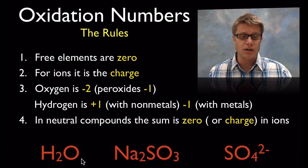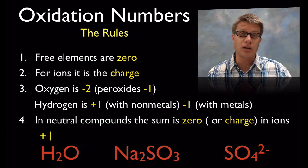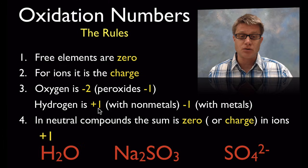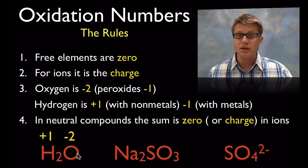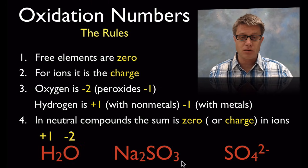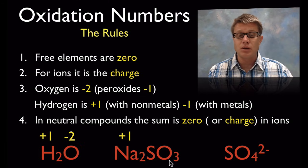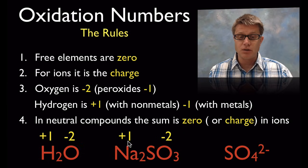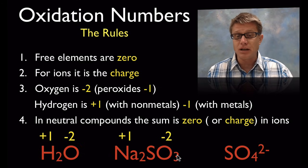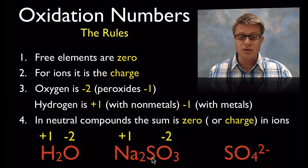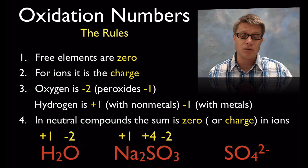Let's start applying those rules. In water, hydrogen is plus 1 since it's bonded to a nonmetal, and oxygen is minus 2 — and since we have 2 hydrogens, they sum to 0. For sodium sulfite, Na₂SO₃: sodium is plus 1, oxygen is minus 2. We have 2 sodiums giving plus 2, and 3 oxygens giving minus 6, so sulfur must be plus 4 to sum to 0.